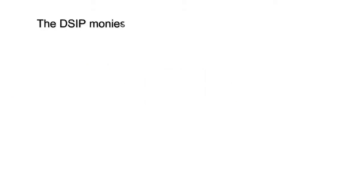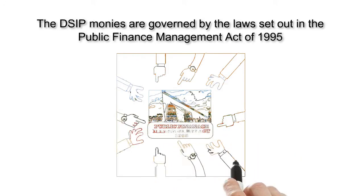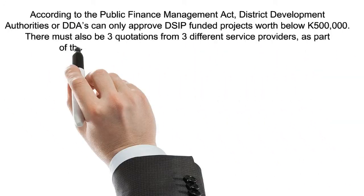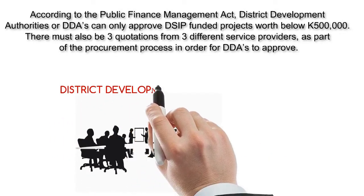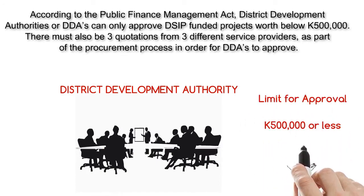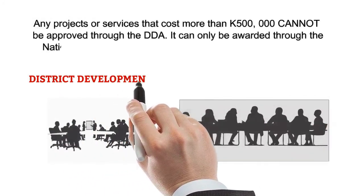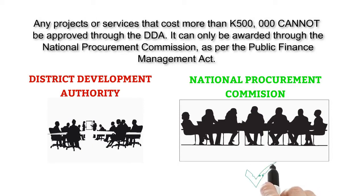The DSIP monies are governed by the laws set out in the Public Finance Management Act of 1995. According to the Act, District Development Authorities, or DDAs, can only approve DSIP-funded projects worth below 500,000 kina. There must also be three quotations from three different service providers as part of the procurement process. Any projects or service works that cost more than 500,000 kina cannot be awarded by the DDA — they can only be awarded through the National Procurement Commission, as per the Public Finance Management Act.